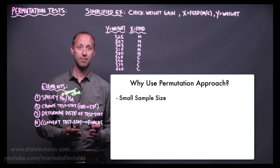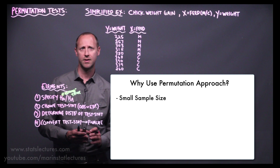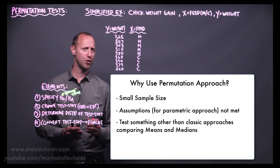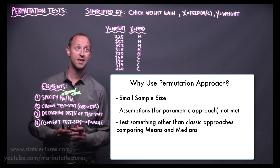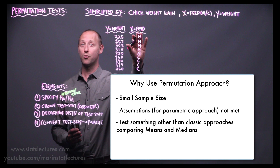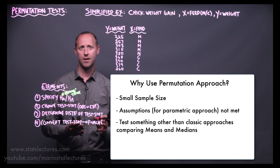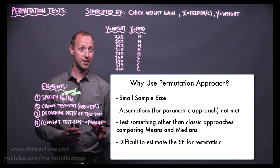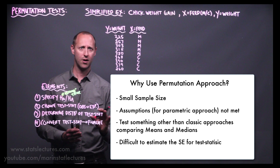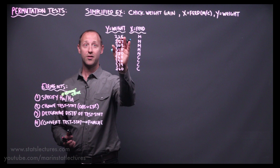Let's talk about why we might choose to use a permutation approach. If our sample size is small and we can't use large sample approaches, that might be one reason. If the assumptions are not met, or if we want to test something more specific — for example, comparing the 10th percentile of the two feed types, or the range of weights. These approaches also help when the test statistic we're working with is difficult to estimate the standard error for.